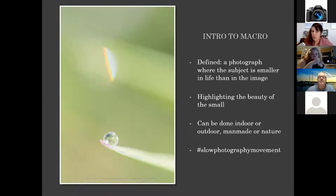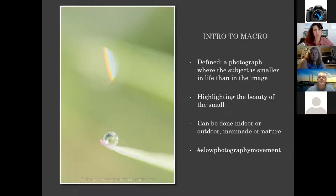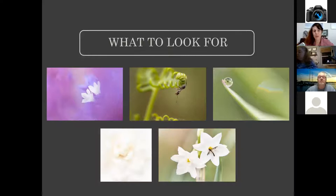Macro can be done both indoors, outdoors, man-made, or nature — it's all up to you as to how you use these techniques. I use the hashtag slow photography movement, because that hashtag is used a lot by a group of photographers who are trying to get more people to really slow down and look around them for various opportunities. Macro fits right into that, because you really do have to slow down. You're not rushing to a particular spot because you know there's one flower there with a bug on it — that's not how this works.